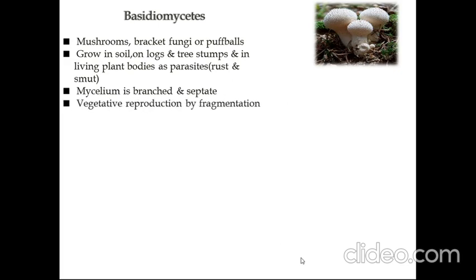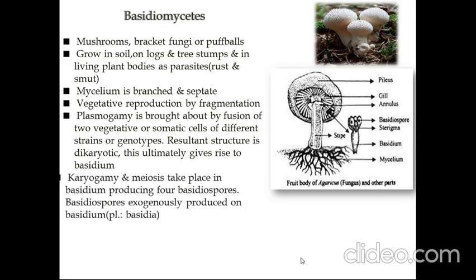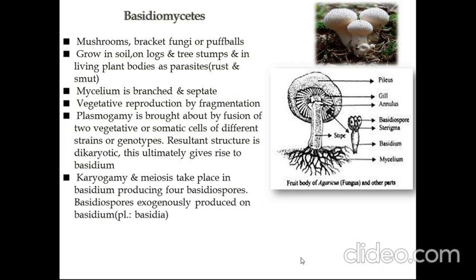Their vegetative reproduction is done by fragmentation. Plasmogamy is brought about by fusion of two vegetative or somatic cells of different strains or genotypes, and the resulting structure is dikaryotic. This ultimately gives rise to a basidium, where karyogamy and meiosis take place, producing four basidiospores.